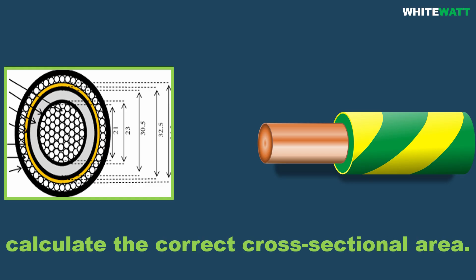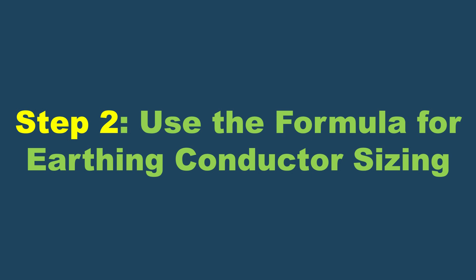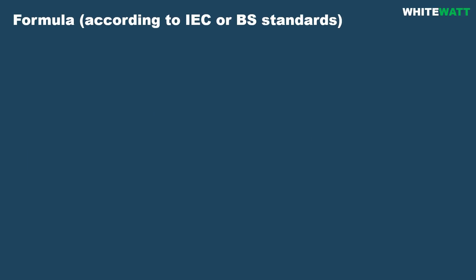Step 2: Use the formula for earthing conductor sizing. Formula according to IEC or BS standards: S = √(I² × t) / k, where S is cross-sectional area in mm², I is fault current in amperes, and t is fault clearance time in seconds.